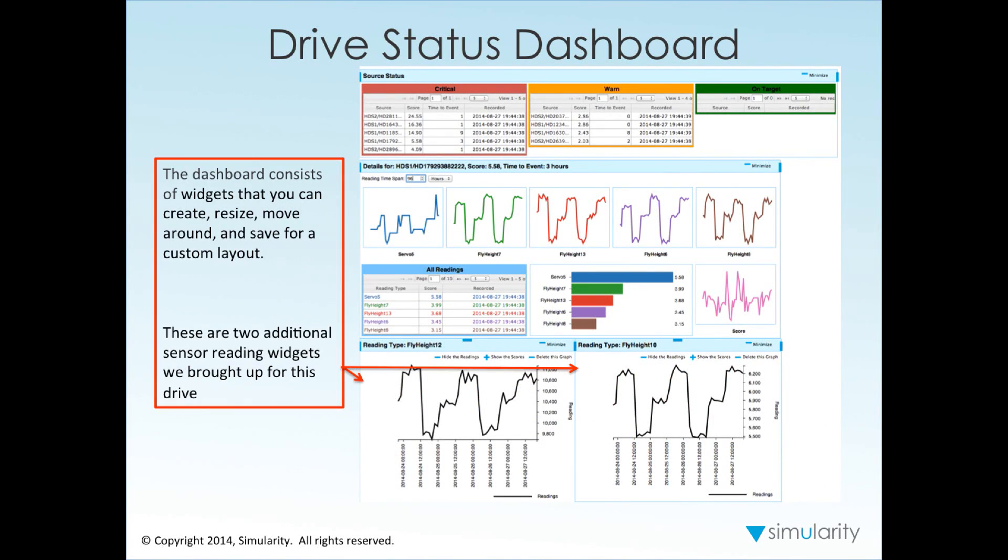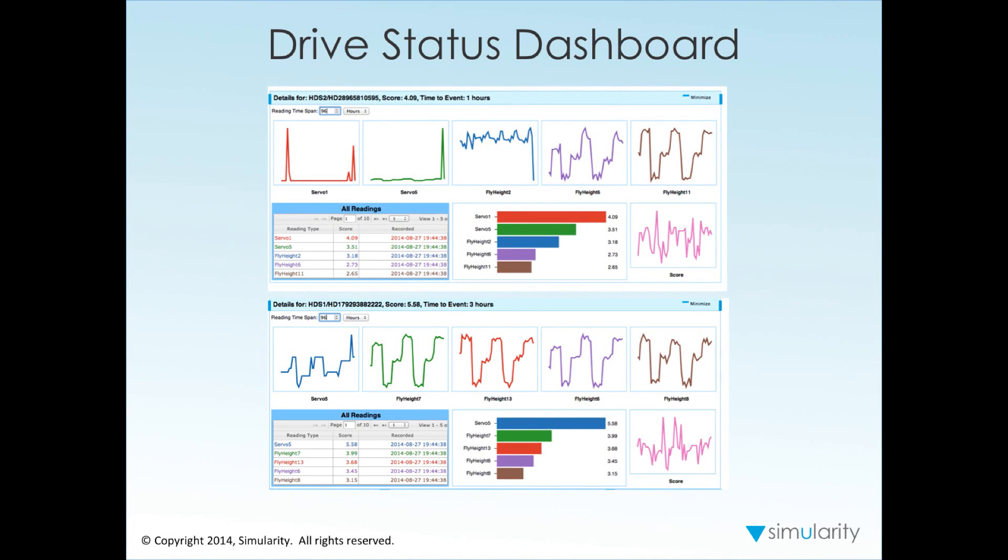Here is an example of the drive status dashboard where you can look at all the other sensor readings. There are 53 sensors, and if you're exploring a particular drive, you can bring up widgets to look at any of the additional sensor readings over time.